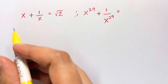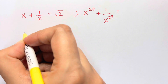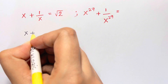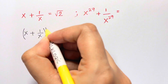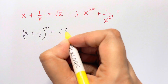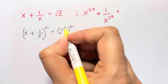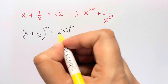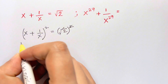The first step is to square both the left-hand side and the right-hand side. So we have (x + 1/x)² equals (√2)². The root and square on the right-hand side cancel out.